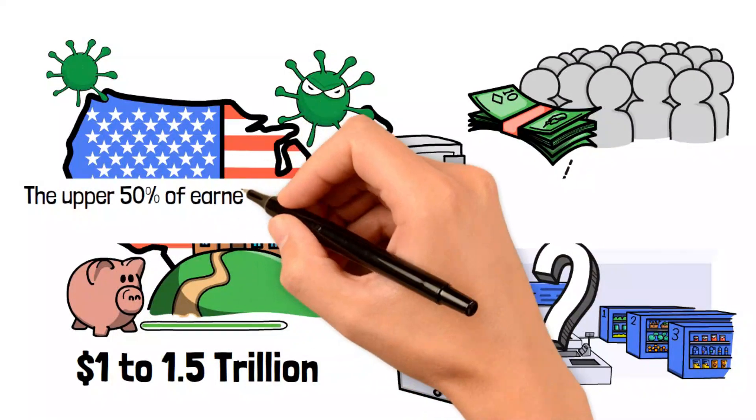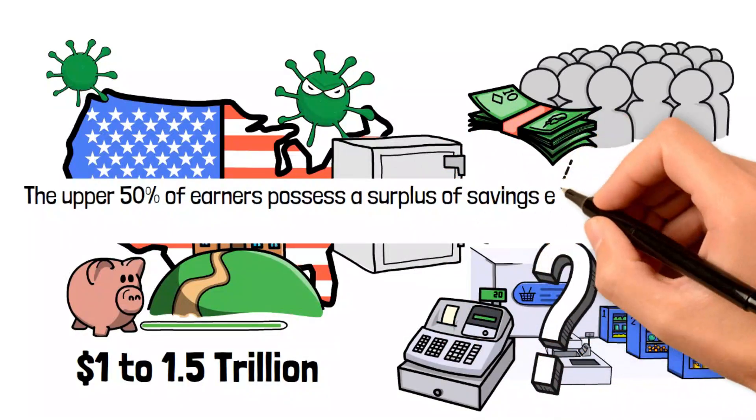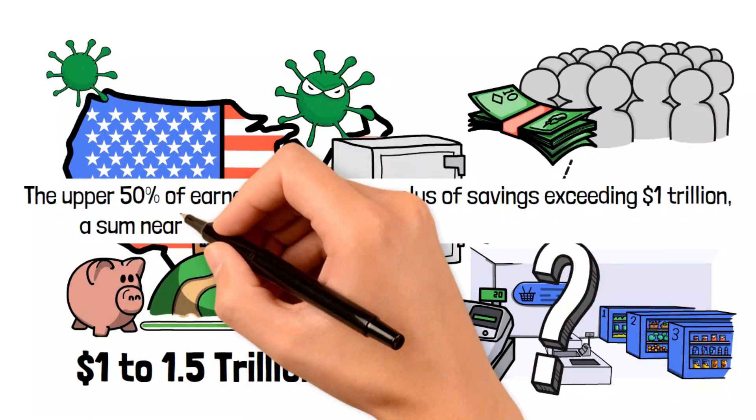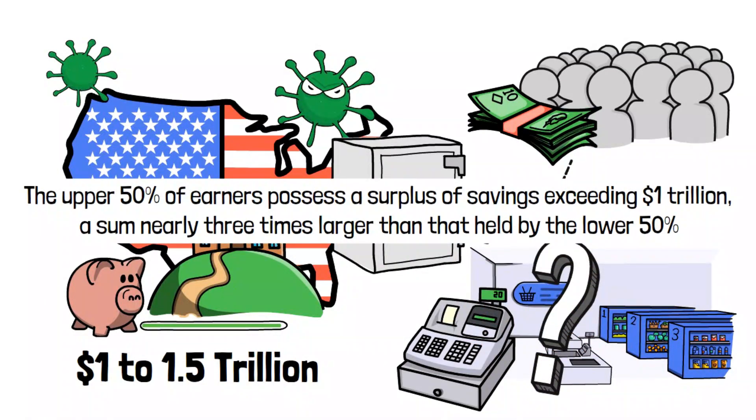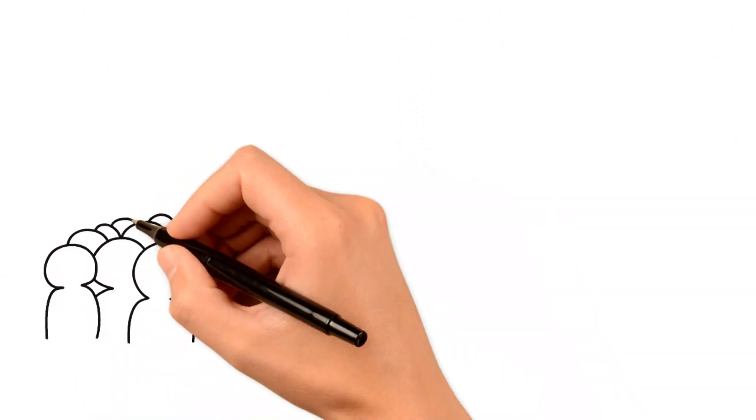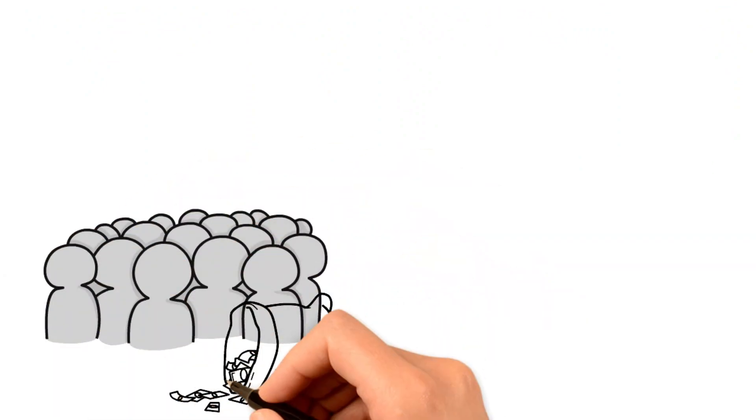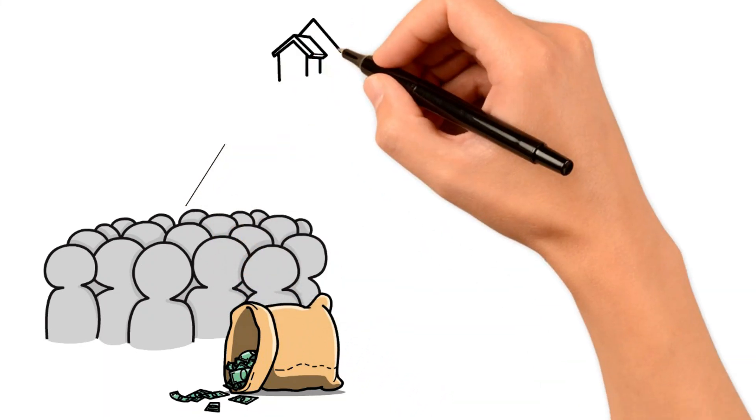The upper 50% of earners possess a surplus of savings exceeding $1 trillion, a sum nearly three times larger than that held by the lower 50%, as indicated by government economists. However, it's worth noting that the latter group still collectively retains hundreds of billions of dollars in excess savings.